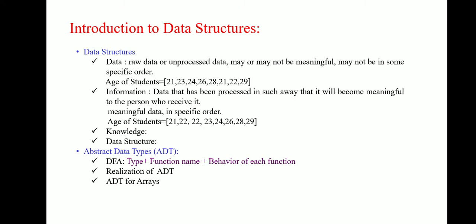Then next concept is called as abstract data type. What is abstract data type? Abstract data type is a triple of D set of domains, F sets of functions and A axioms. Now here in ADT, all the implementation details are hidden. In short, ADT consists of type, function names, behavior of each function.